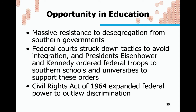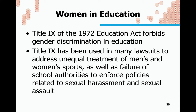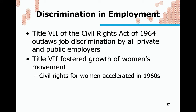The civil rights movement was massive collective political action demanding that the civil rights whites enjoyed be extended to African Americans. Civil rights organizations built networks across the South and around the country, organized protests, used the power of media, and used the court system. Today's Black Lives Matter movement is really an extension of this. Regarding education opportunities, federal courts struck down tactics to avoid integration, and presidents Eisenhower and Kennedy ordered federal troops to southern schools in the 50s and 60s. The Civil Rights Act of 1964 expanded federal power to outlaw discrimination. Title IX of the 1972 Education Act forbids gender discrimination in education.